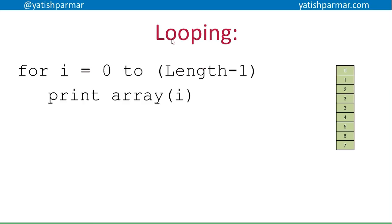When you have a one-dimensional array and want to loop through it efficiently, you use a loop: `for i = 0 to length - 1, print array[i]`. I'm doing length minus one because the array index starts at zero — so if the array length is 8, I want to stop at index 7. If I don't, I'll get an index out of bounds error because I'll fall off the end of the array.